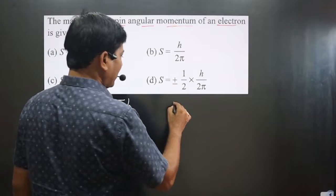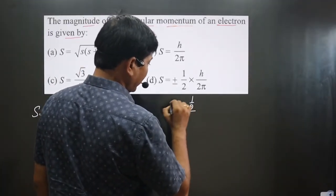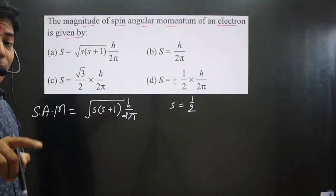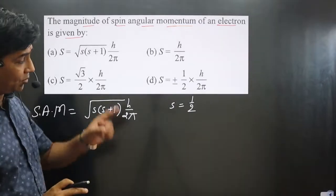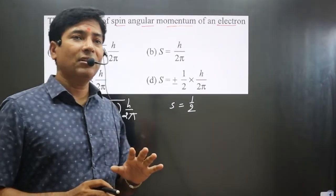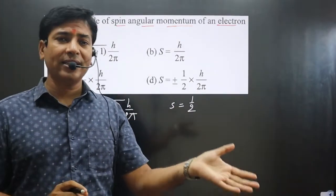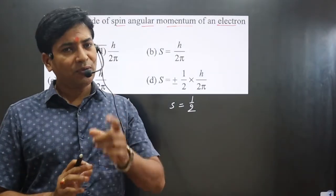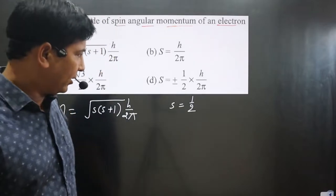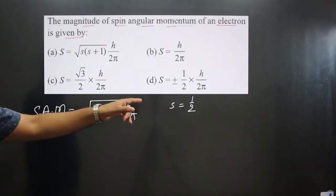The s value we will take as one-half. We will not take either positive or negative; we take only the absolute value. Just as in the case of n factor, whether there is loss or gain of electron, we take only the neutral value. So the s value is one-half.